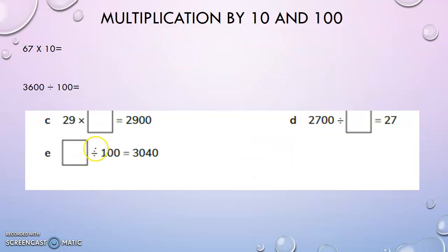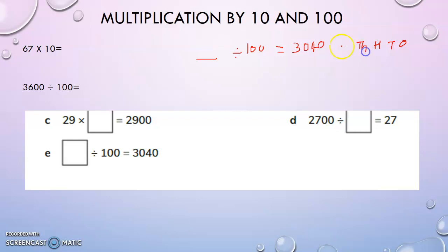Now let us look at the other question. A number divided by hundred gives you three thousand forty. Since dividing by hundred shifts two places to the right, to find the original number we must shift three thousand forty two places to the left — ones, tens, hundreds, thousands, ten-thousands. Shifting two places to the left, we move toward the hundred-thousands place. So we get three hundred and four thousand.